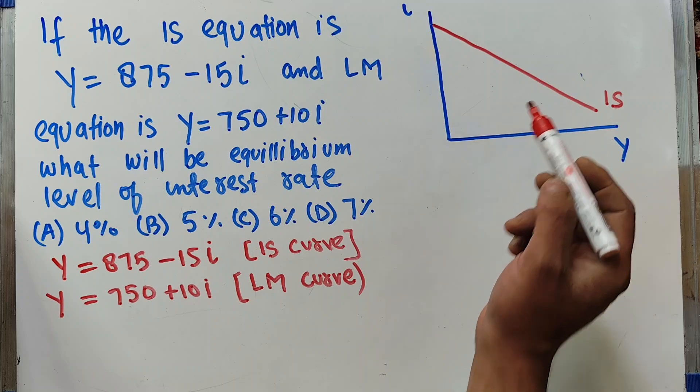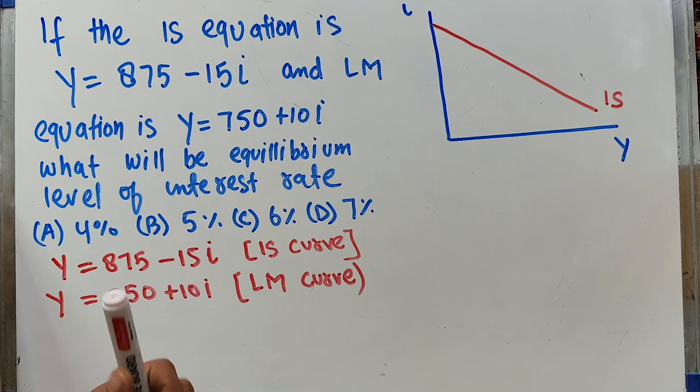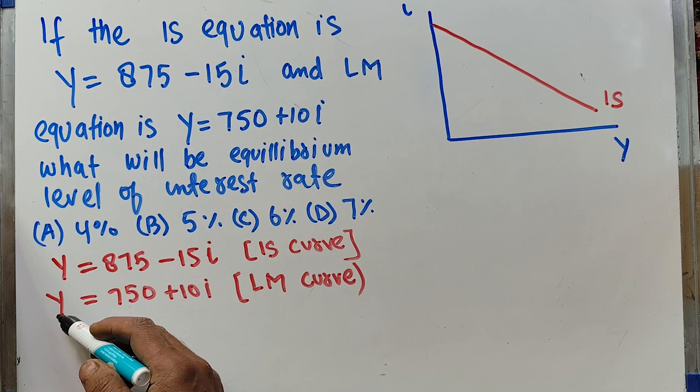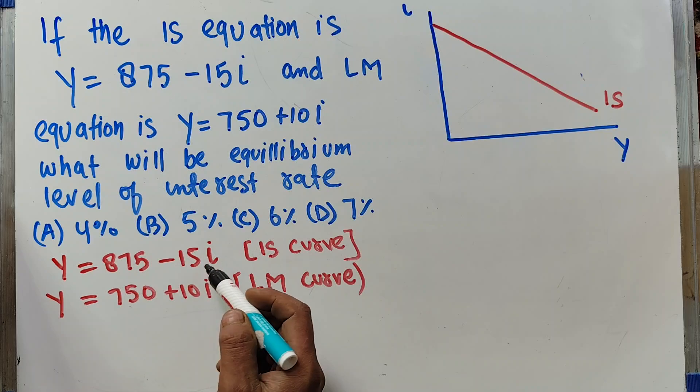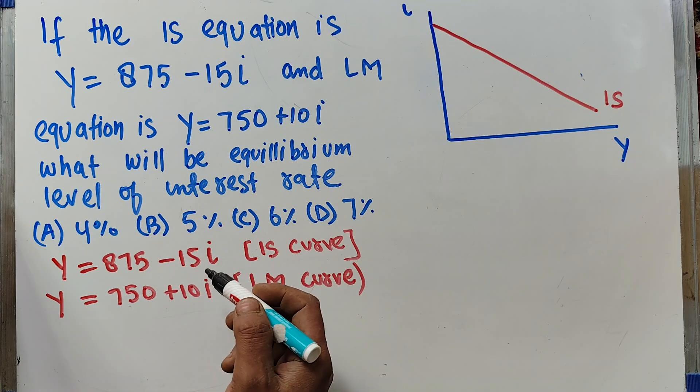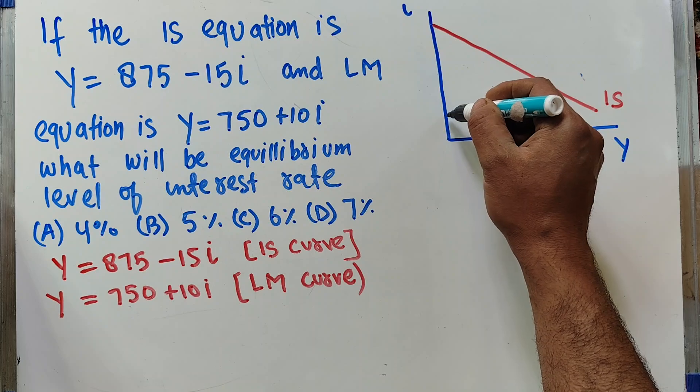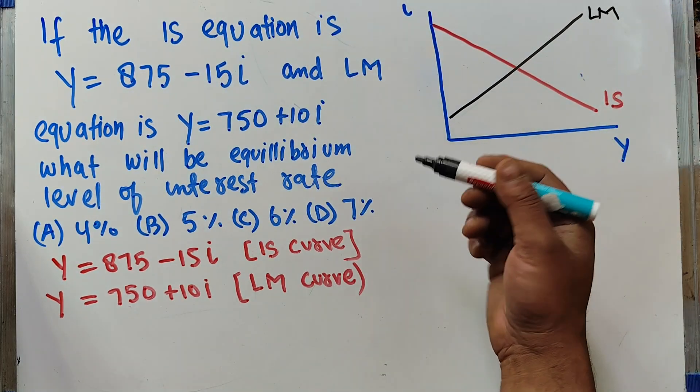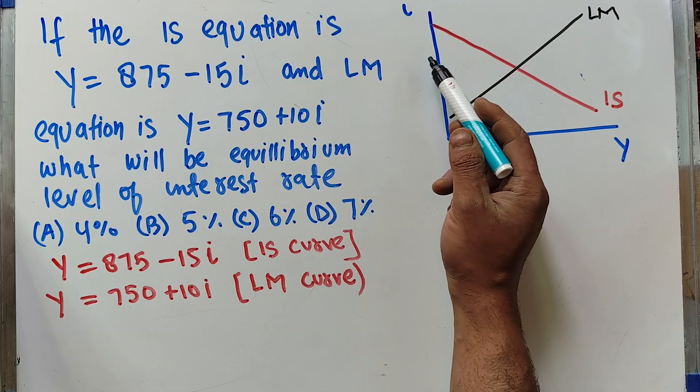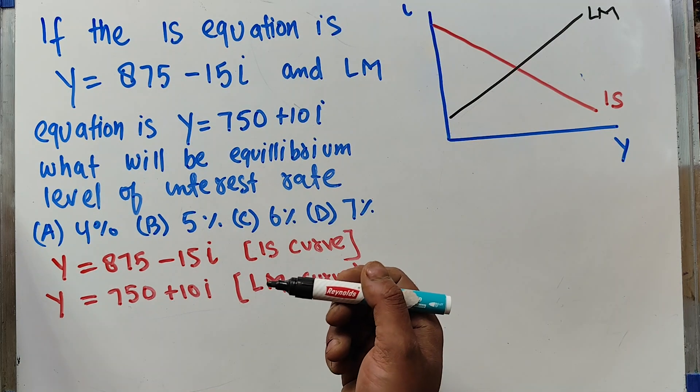The LM curve has a positive slope because income and interest are positively related. On the IS curve, income and interest are negatively related. The LM equation shows different combinations of interest rate and income where the money market is in equilibrium.